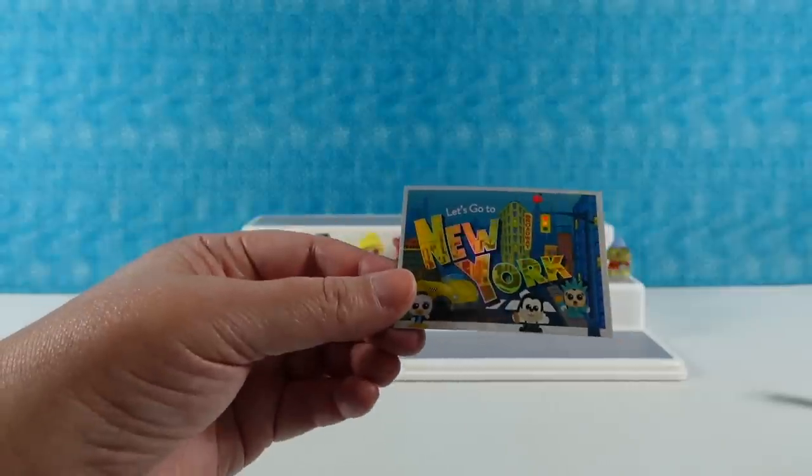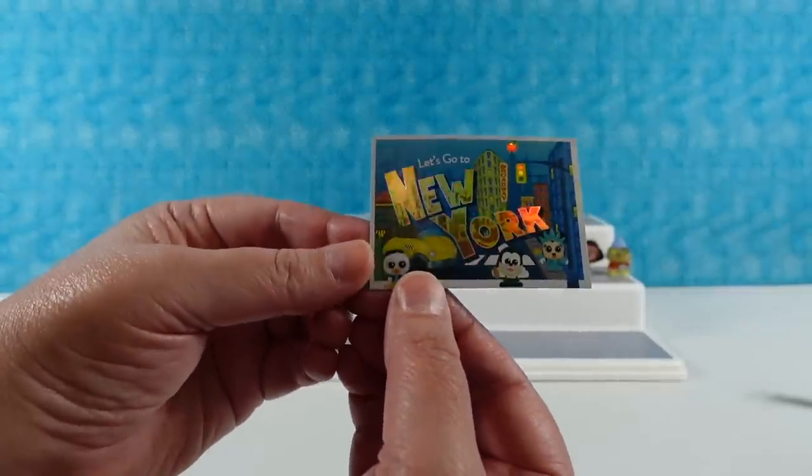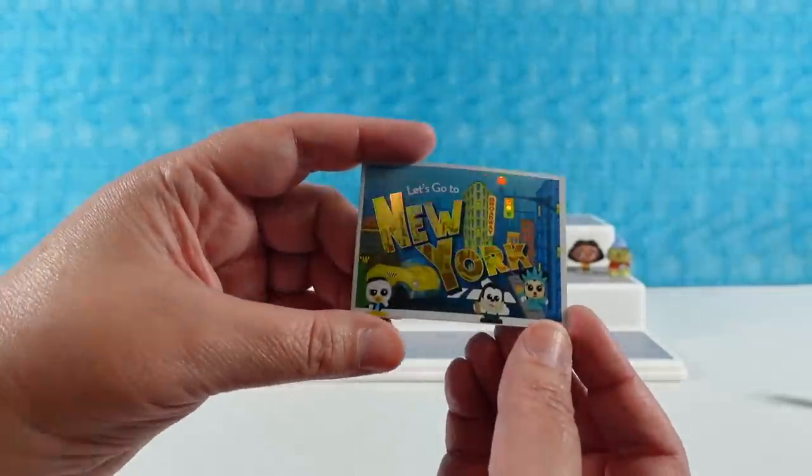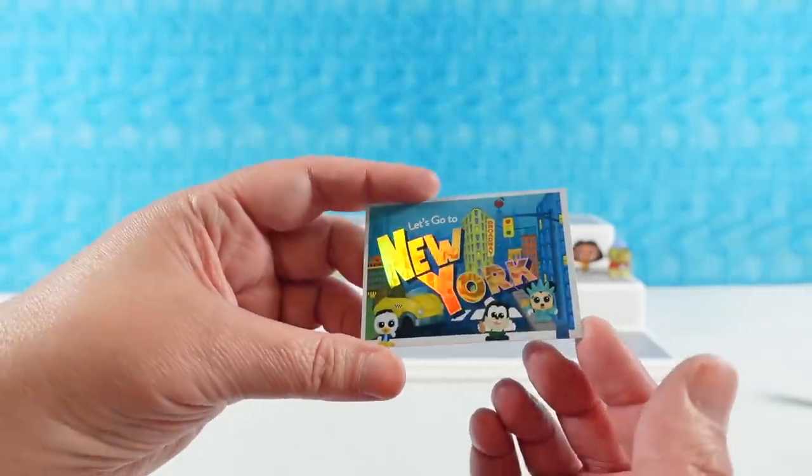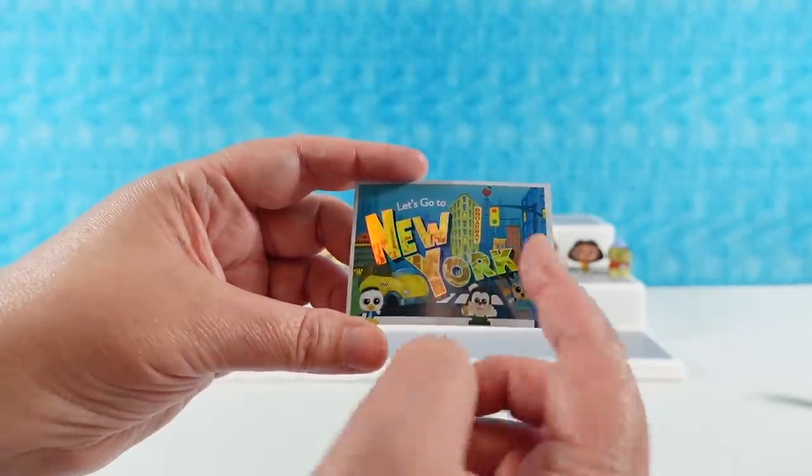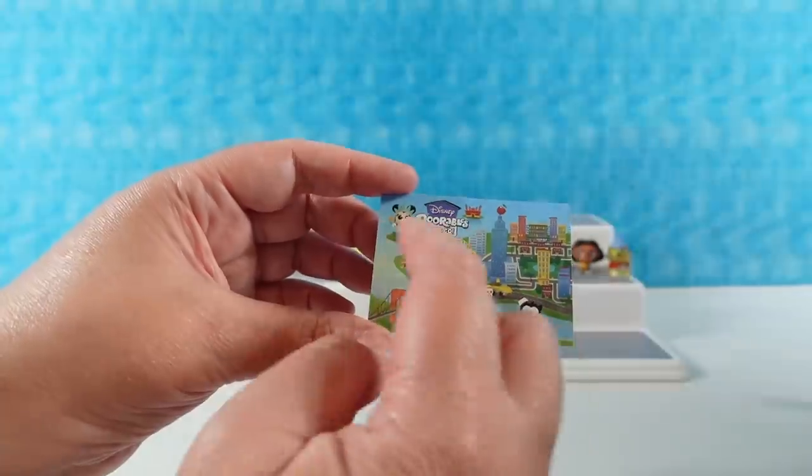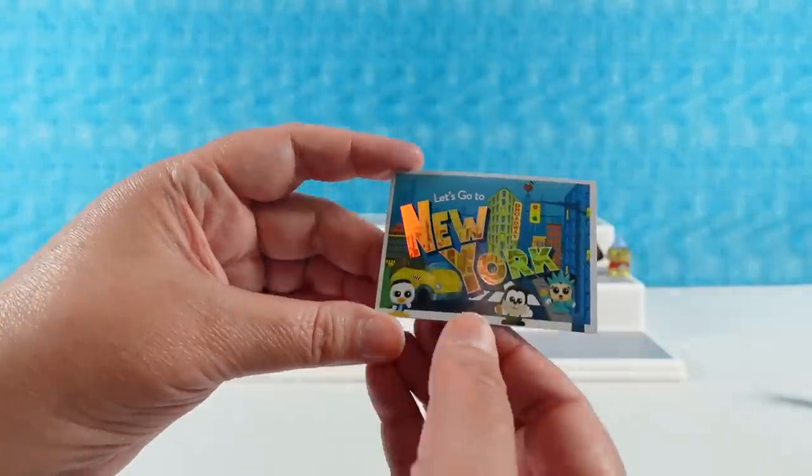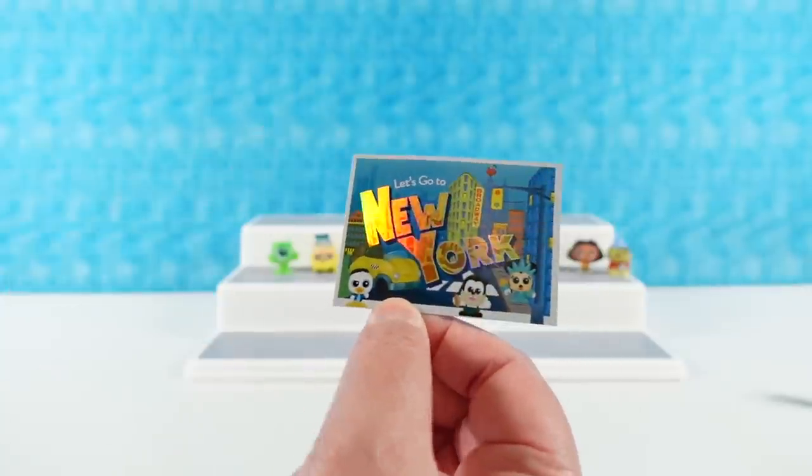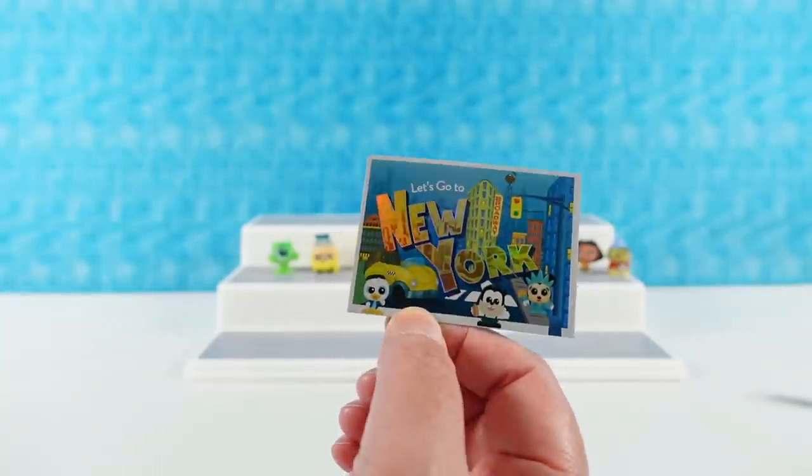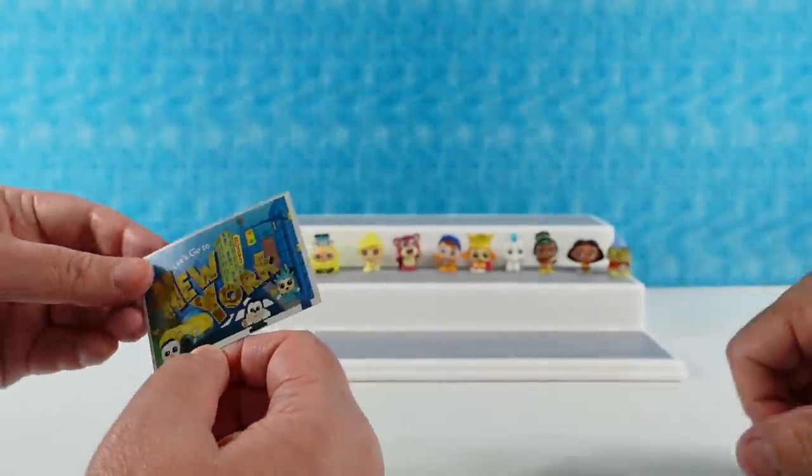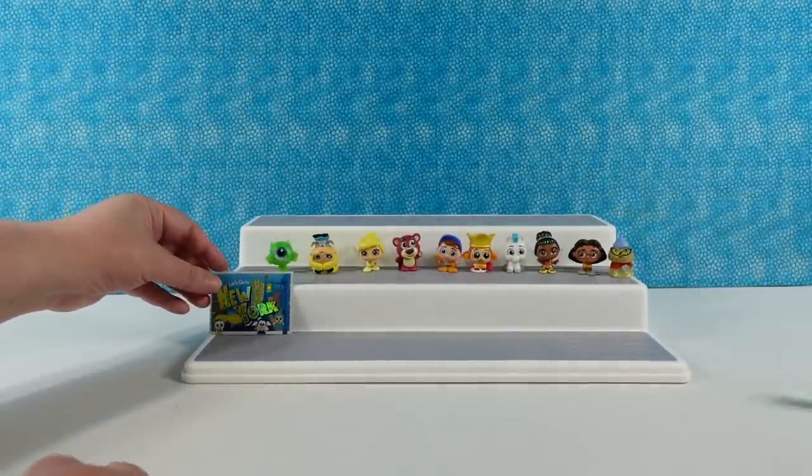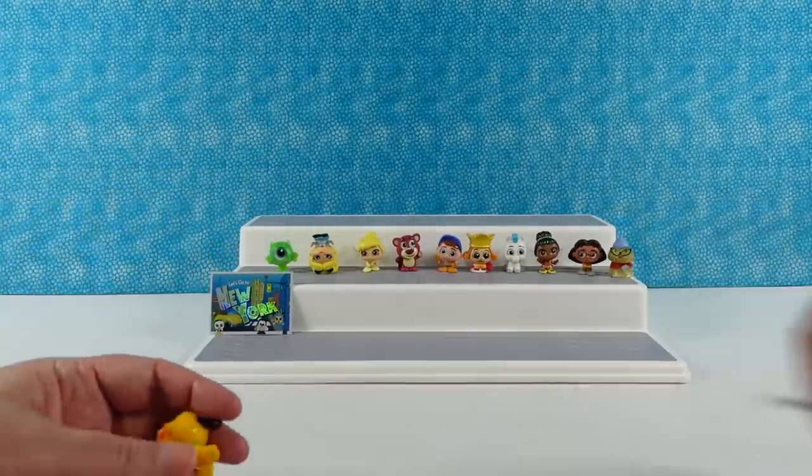It came with an exclusive card. So, the Let's Go Doorables come with collector cards that you can collect as well. Check out this New York one. It has foil on it. It has all of our characters. I didn't realize that Minnie was one of the exclusive ones that was coming in the set. So, that's awesome. I'm going to be keeping her. I'm going to put her by my desk. So, very cool card. Just set that there. And you better pass Minnie over.